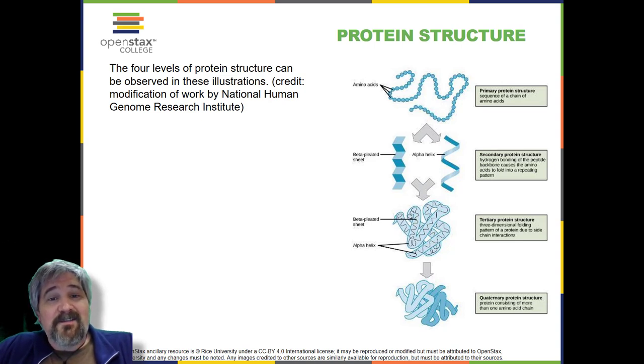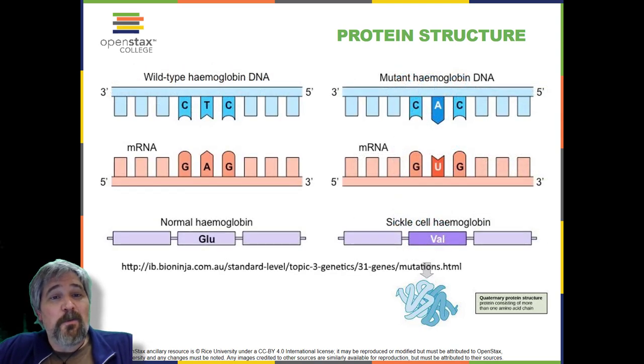The unique sequence and number of amino acids in a polypeptide chain is its primary structure. The unique sequence for every protein is ultimately determined by the gene that encodes the protein. Any change in the gene sequence may lead to a different amino acid being added to the polypeptide chain, causing a change in the protein structure and function. In sickle cell anemia, the hemoglobin beta chain has a single amino acid substitution, causing a change in both the structure and function of the protein. What is most remarkable to consider is that a hemoglobin molecule is made up of two alpha chains and two beta chains that each consist of about 150 amino acids. The molecule, therefore, has about 600 amino acids.